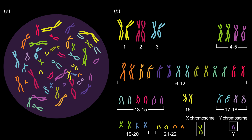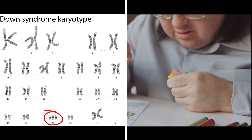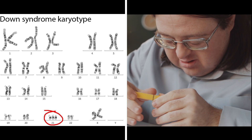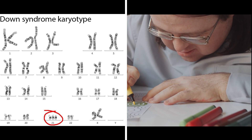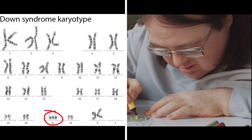The most severe is chromosomal aneuploidy, meaning that a person has one or more extra copies of actual chromosomes or is missing chromosomes. The best known example is Down syndrome, which is caused by three copies of chromosome 21, or trisomy 21, which almost always occurs de novo.